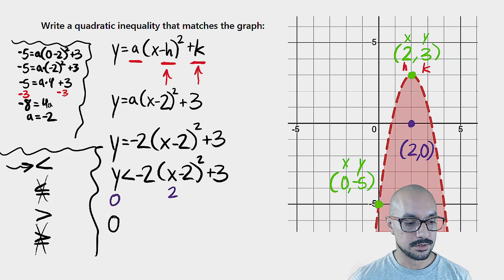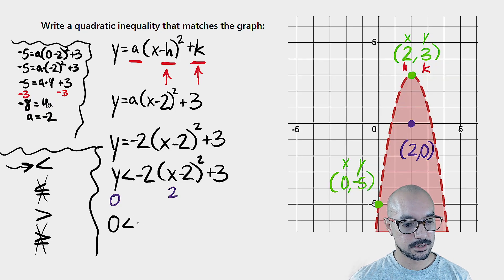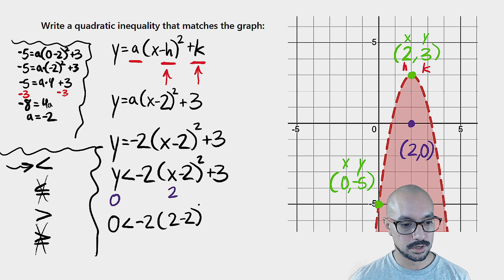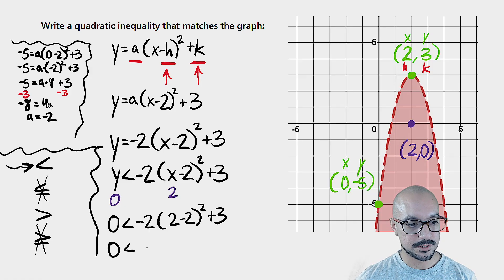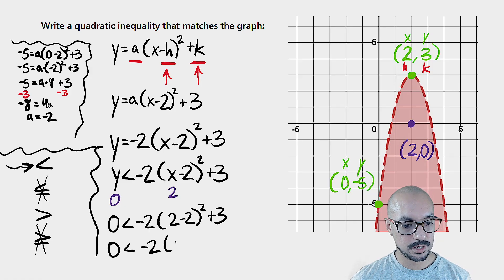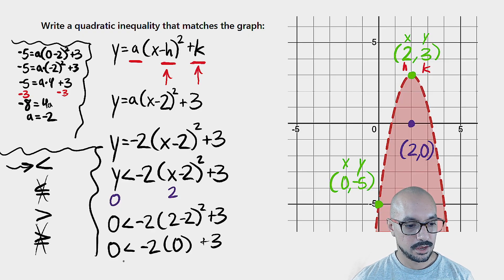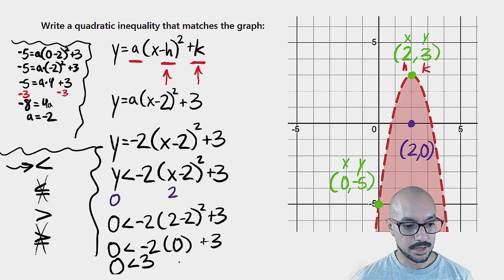So we end up with zero is less than negative two times the quantity two minus two squared plus three. Simplifying, I get zero is less than negative two times zero plus three. And finally I get zero is less than three. That is a true statement.